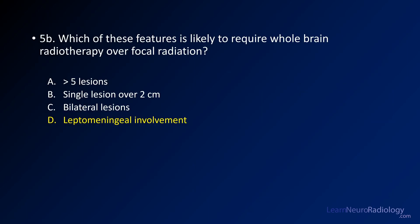For the second question — which feature is likely to require whole brain radiation — leptomeningeal involvement is the answer. A single lesion over 2 centimeters can be treated with stereotactic radiosurgery, possibly requiring multiple fields. Bilateral lesions don't necessarily require whole brain radiation, and stereotactic radiosurgery can be used for many lesions, with some centers treating up to 10 or more lesions.